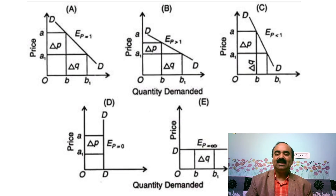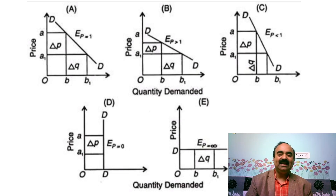3. Relatively Inelastic Demand, shown in Diagram C: Price elasticity of demand is said to be relatively inelastic if percentage change in quantity demanded is less than the percentage change in price. In this case, EP will be less than 1. 4. Perfectly Inelastic Demand, shown in Diagram D: Price elasticity of demand is said to be perfectly inelastic when, whatever may be the change in price, there will not be any change in quantity demanded. In this case, EP will be equal to 0.